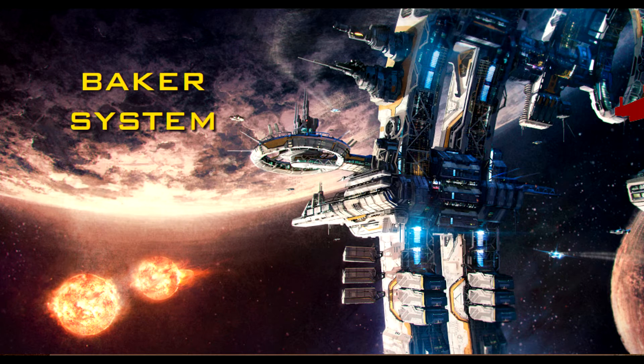Baker is a binary system consisting of two Type K main sequence stars surrounded by a relatively desolate collection of planets that range from completely uninhabitable to barely habitable. A Covilex shipping hub and a largely automated mining outpost are the sole bastions of civilization in the region. As usual, that's only half of the story.